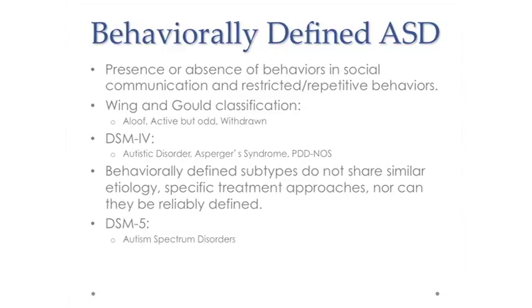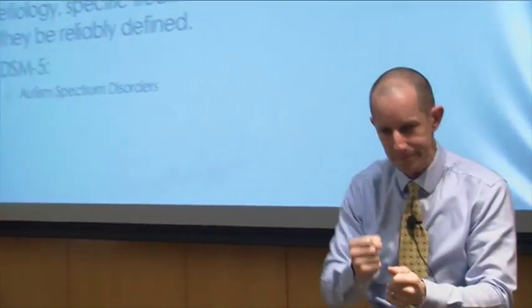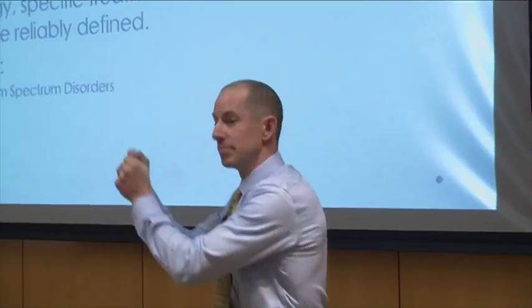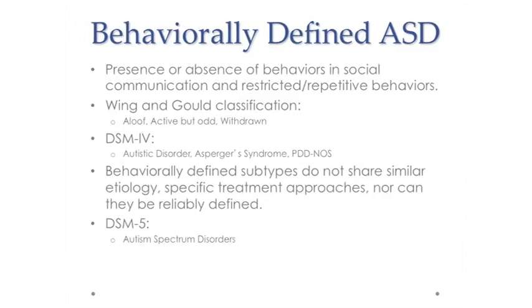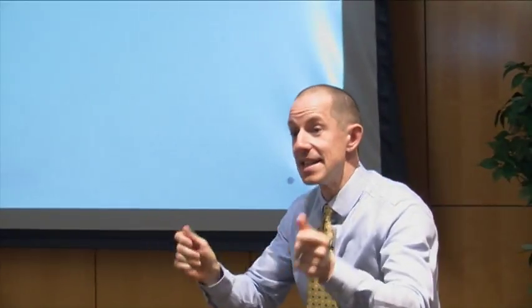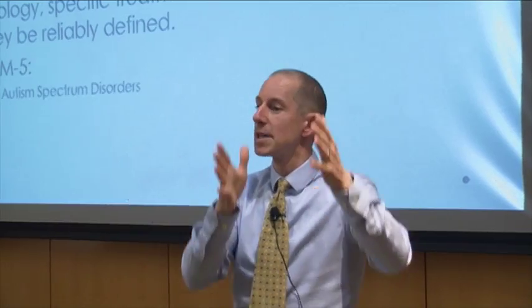It was unclear how we might apply treatments to each of those behaviorally defined subtypes. As a clinician, if a family came in and I said Joey meets criteria for Asperger's Syndrome and Billy meets criteria for Autistic Disorder, there wasn't a particular treatment I could say would definitely work for one but not the other. There wasn't clear utility at the intervention level. We also did work showing that even really good diagnosticians were not so good at determining which child fit into which behaviorally defined subtype. So we moved to DSM-5, which uses a broader umbrella term, opening up opportunities to think about other ways of subtyping — perhaps a genetics-first approach.